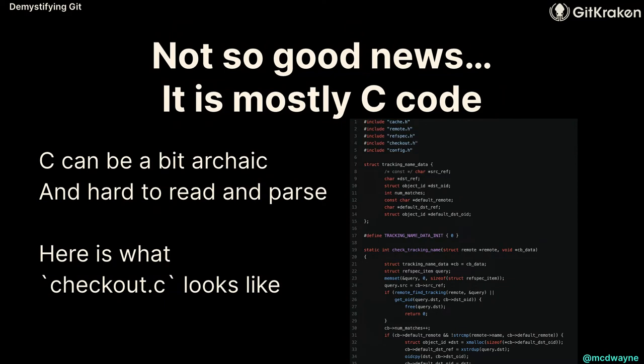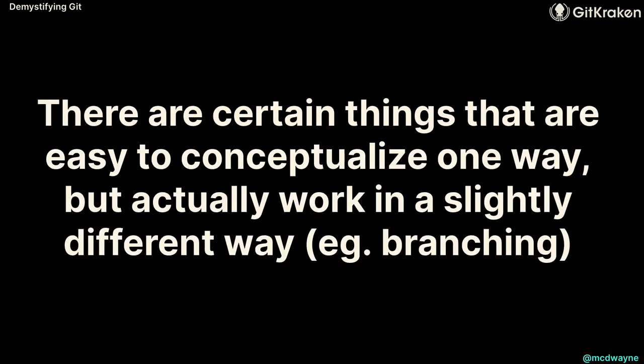The bad news is it's mostly C, and C is really hard to parse and read. One of the things that makes it hard is that there are concepts that keep getting explained one way because it's easy to explain them that way — but that's not how Git actually works. Like branching — we'll get to that later.